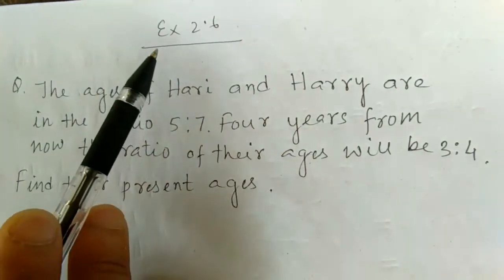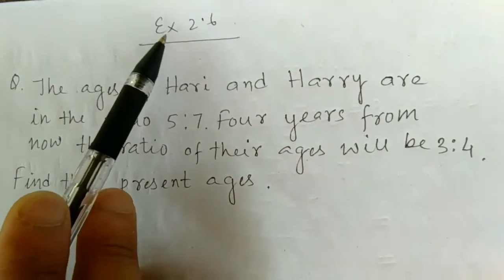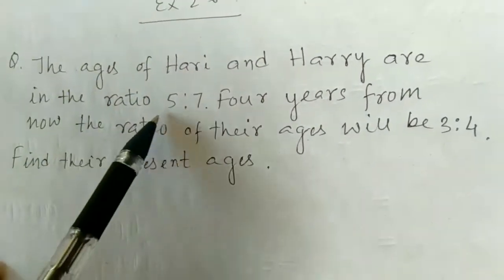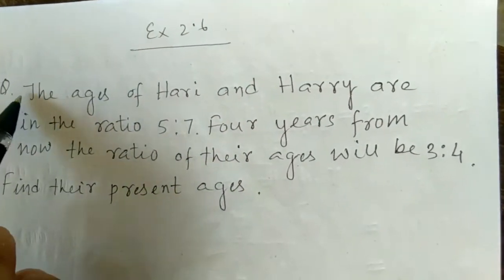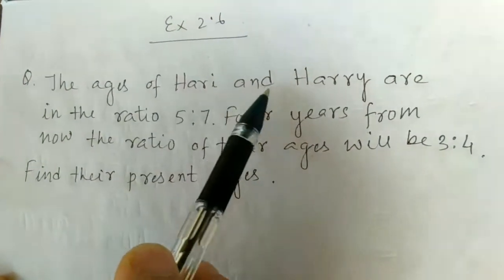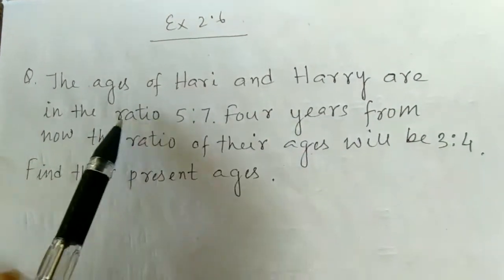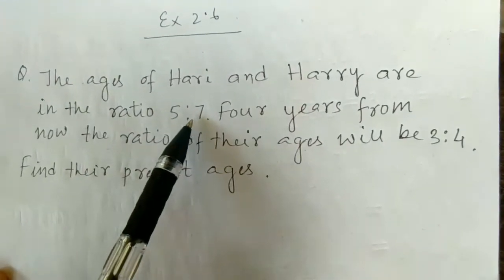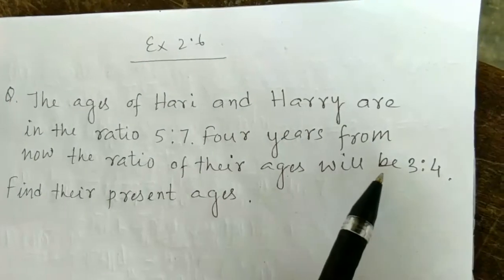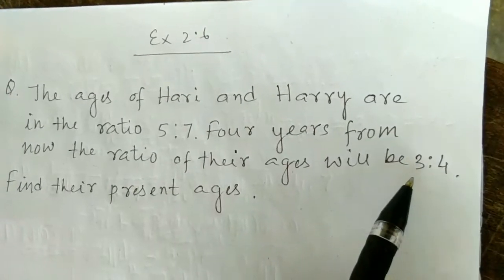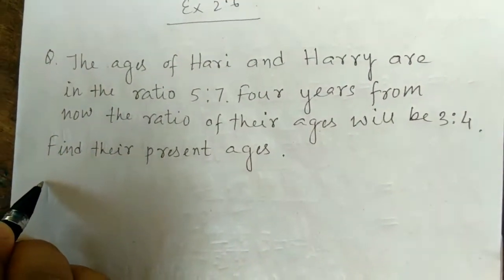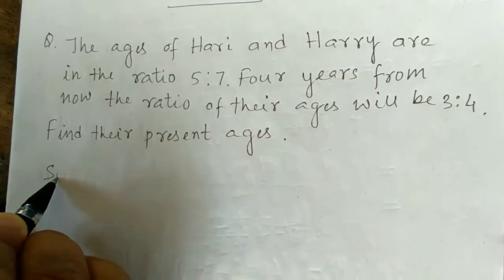Good morning. Today we are doing Exercise 2.6. The question: the ages of Hari and Harry are in the ratio 5 is to 7. Four years from now, the ratio of their ages will be 3 to 4. Find their present ages. So how to find their present ages, let me show you.